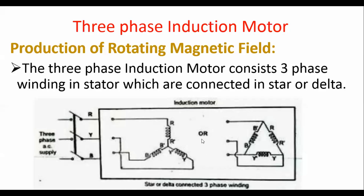The stator winding is either in star connection or delta connection, meaning it has three phases: R phase, Y phase, and B phase — that is R, R-dash, Y, Y-dash, and B, B-dash. When the three-phase winding is excited by the three-phase supply, each winding carries a current. The current flowing in the R winding produces flux φR, in the Y winding φY, and in the B winding φB.